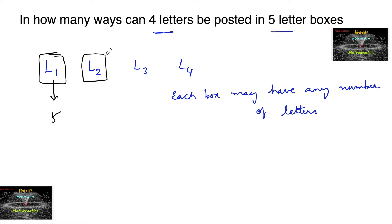Letter 2 also has five possibilities, and letter 3 also has five possible ways, and letter 4 also has five possible ways, because each box may have any number of letters. So the same letters can be posted in one box—all four letters can be posted in one box, or two letters in one box, anything can happen.